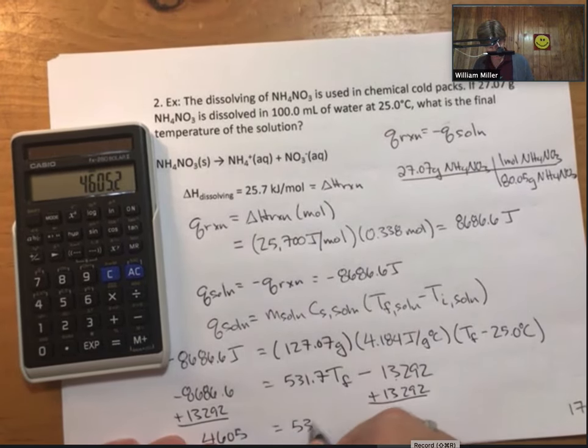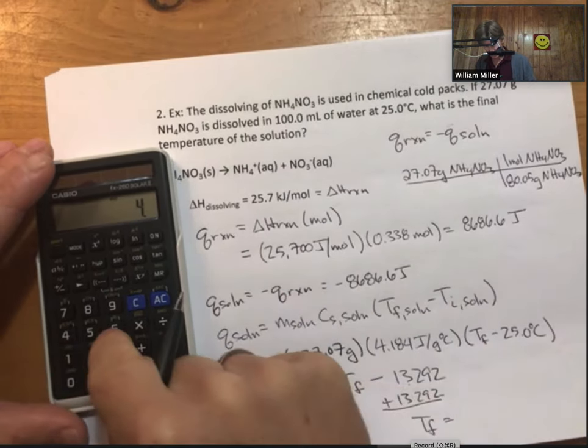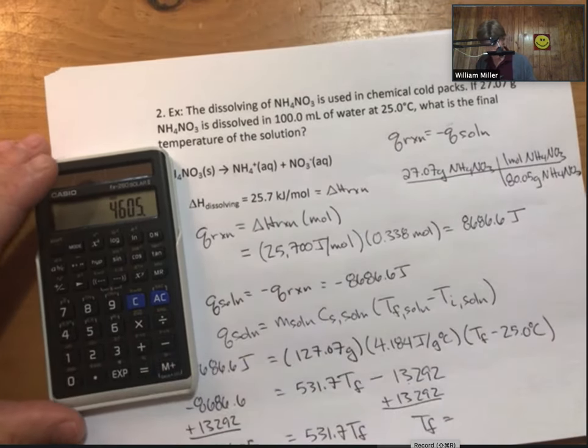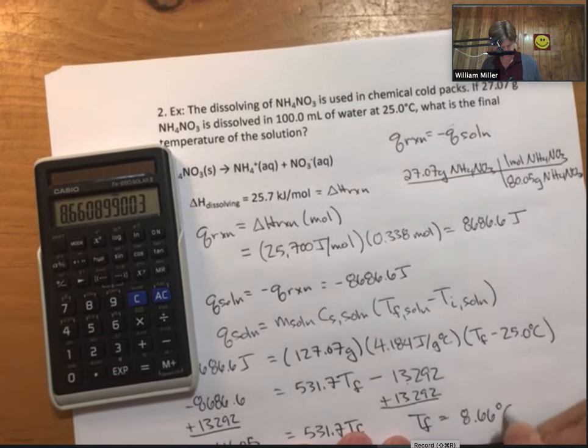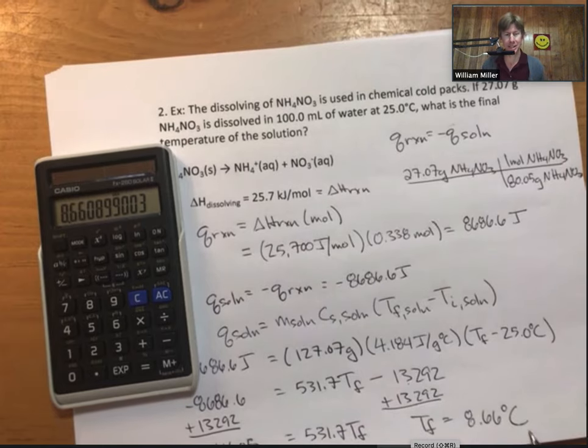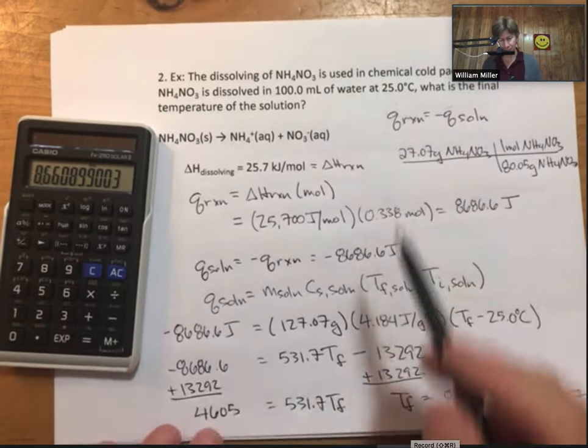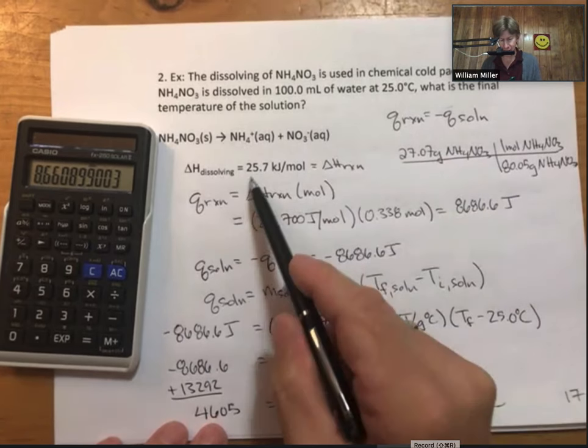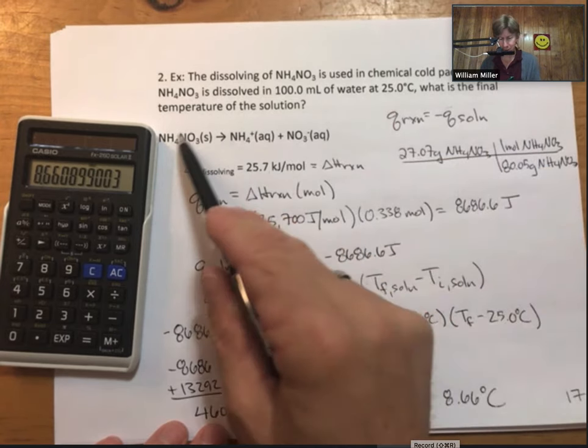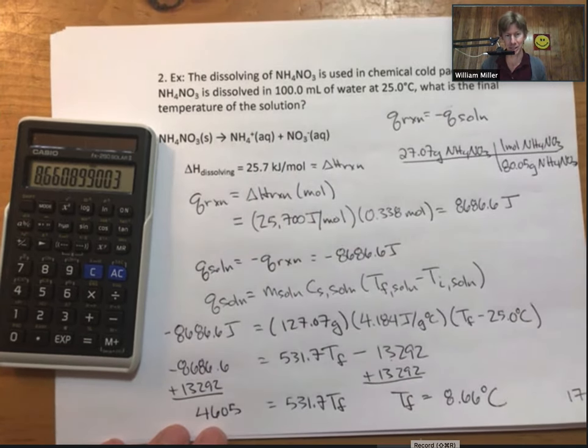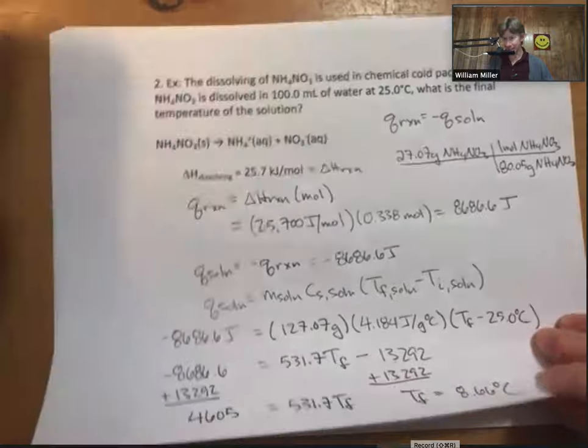Divide through both sides by 531.7, and I get 8.66 degrees Celsius for my final temperature. That is a good temperature - it is lower than the initial temperature because endothermic reactions with positive delta H values lead to final temperatures that are lower because the reaction of dissolving takes in energy. That is how we know ballpark temperature should be lower than we started with. All right, that's two examples. We'll do one more example in this video. Let's do one with a material.